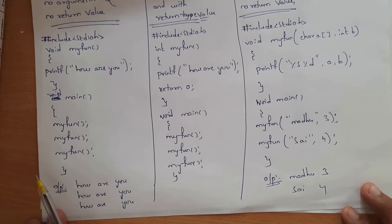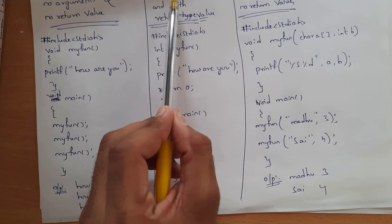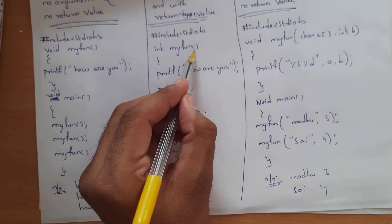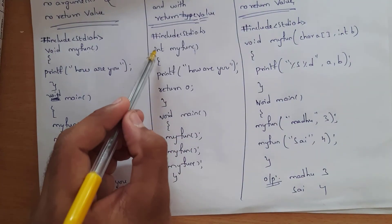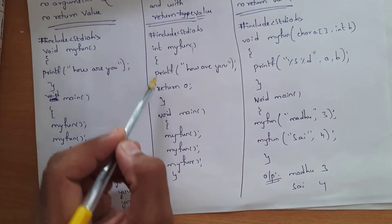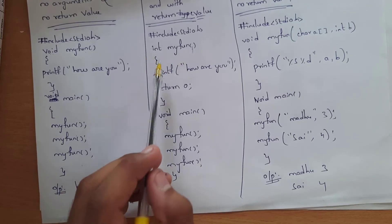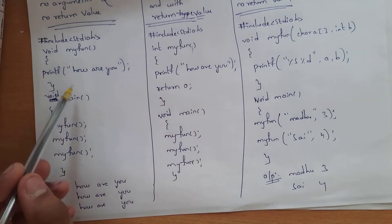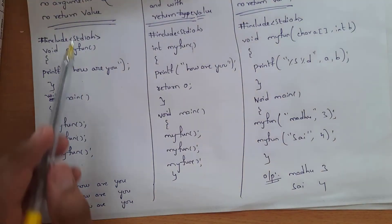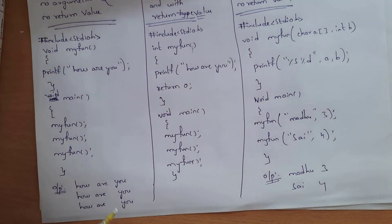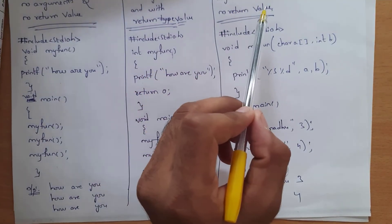The second type is function with no arguments and with return value. It is the same program as before but instead of void, write int, and inside the function add return 0. Output remains 'how are you' three times. The third type is function with arguments and no return value.